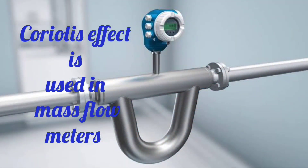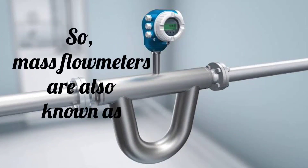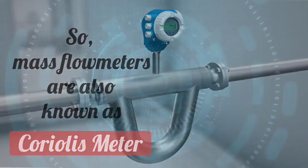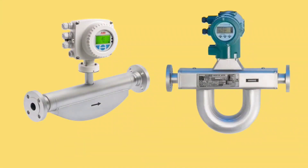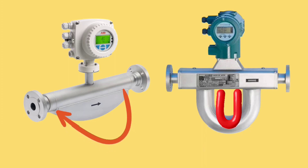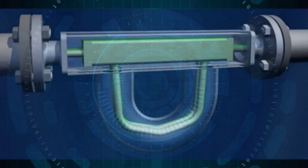The Coriolis effect is used in mass flow meters, that's why mass flow meters are also called Coriolis meters. If you look at mass flow meters, you will find that in mass flow meters a U-type shape is there. These are the flow tubes of the mass flow meter, which usually remain in a U shape.